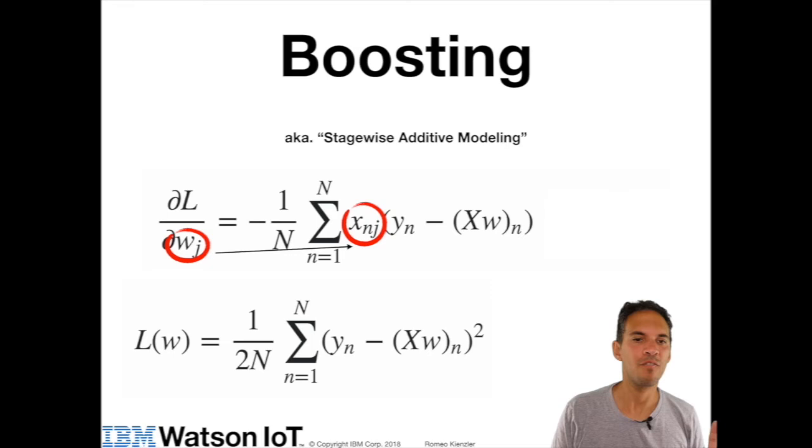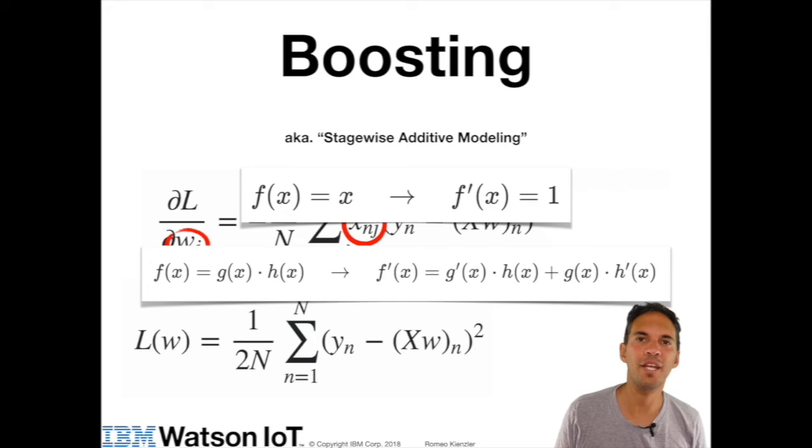So x_nj is basically a term which is part of the weak learner. And since we are taking the partial derivative of l with respect to w_j, the chain rule says that we need to pull out x_nj. Since w_j is part of a nested multiplicative term whereas all the other w_j's become constants and cancel out. So those are the rules which we are using here. The second rule is called the chain rule for partial differentiation.